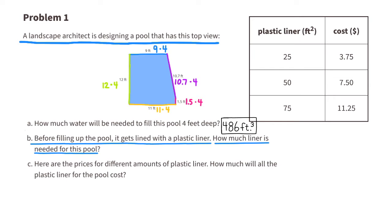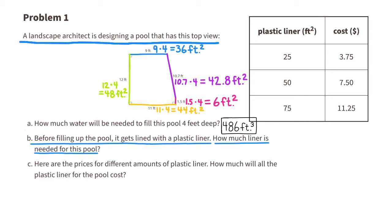Let's find the area for the walls first and then come back to the bottom of the pool. Multiply to find the area for each of the walls, then add up each of their areas and you'll have the combined wall area. The area for all these walls is 176.8 feet squared.